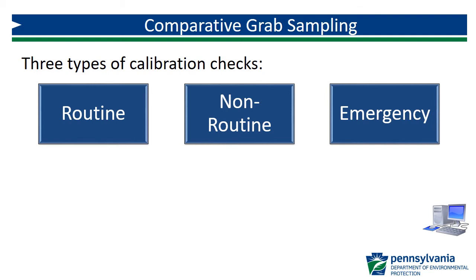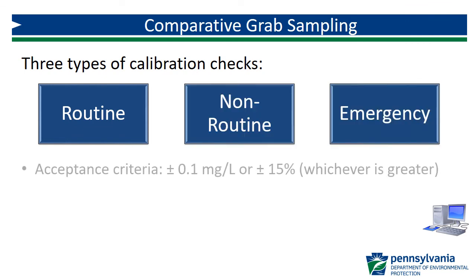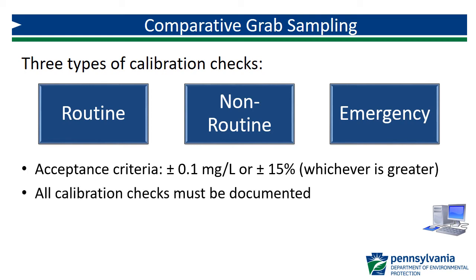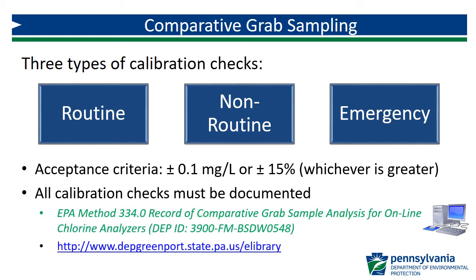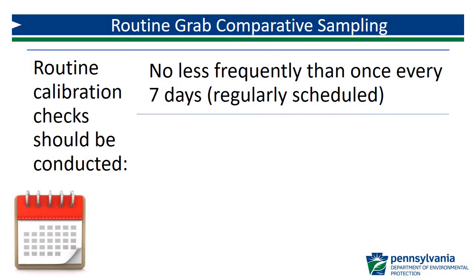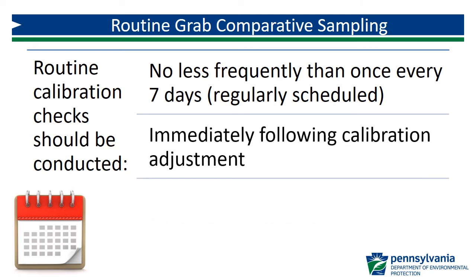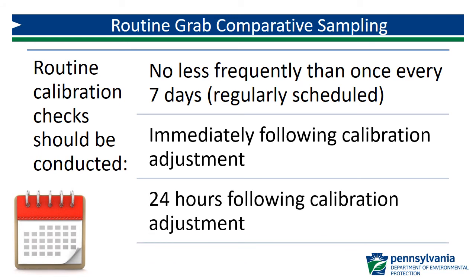Method 334.0 includes three types of comparative grab sampling calibration checks: routine, non-routine, and emergency. The acceptance criteria of ±0.1 mg per liter or ±15% apply to all comparative grab samples. The results of all calibration checks must be documented, regardless of whether they meet the applicable acceptance criteria. For documentation, use the comparative grab sample analysis for online analyzers form discussed earlier. Routine calibration checks should be performed on a regularly scheduled basis — Method 334.0 requires routine comparative samples no less frequently than once every 7 days. The comparative grab samples conducted immediately following a calibration adjustment and 24 hours following a calibration adjustment are considered routine.